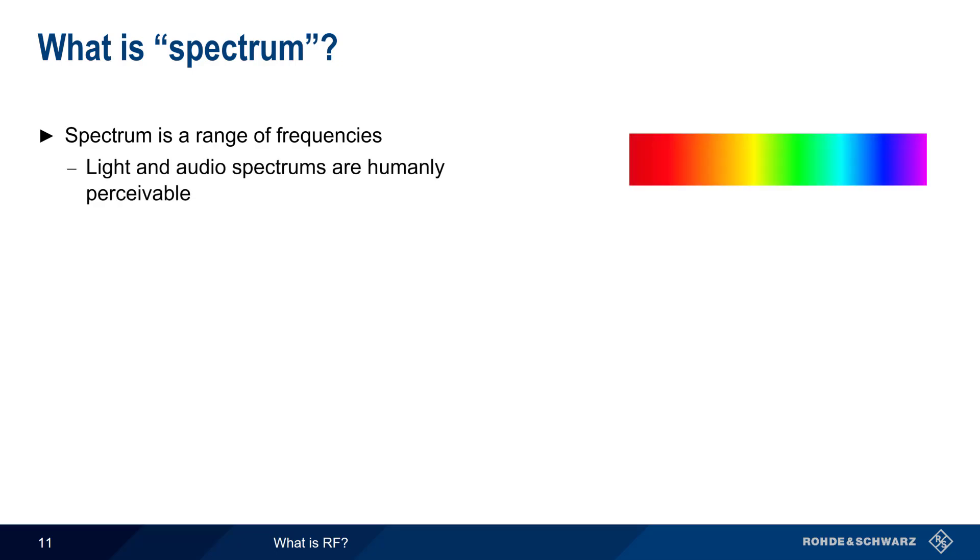The first instrument we'll talk about is something called a spectrum analyzer, so it might be a good idea to spend a moment explaining what we mean by spectrum. The word spectrum generally refers to a range of frequencies. As human beings, we can perceive two different types of spectrum. What we call color is simply how our eyes and brain interpret different frequencies of light. And our ears can also detect and distinguish sounds, that is, vibrations of the air, at different frequencies. But as we mentioned earlier, the radio frequency spectrum is not humanly perceivable.